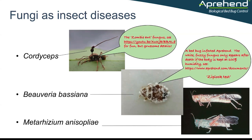This is a useful technique you can use when you go back to a job site where you've applied Apprehend, because you can collect dead or even live bed bugs and put them in a ziploc bag with a piece of moist paper towel. Wet the paper towel, put it in the bottom of the ziploc bag, add the bed bugs, zip up the bag, and keep it at room temperature. If those bed bugs die of the fungal disease, you'll see spores appearing on the outside of the insect — it takes about five to seven days for that to happen.